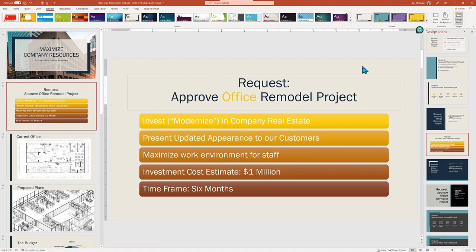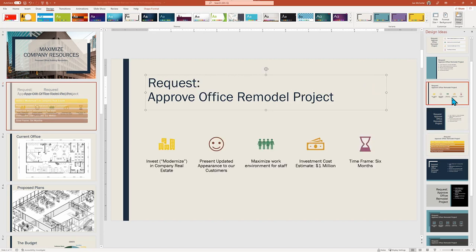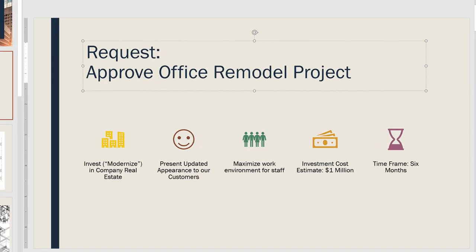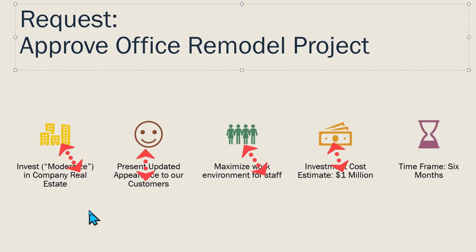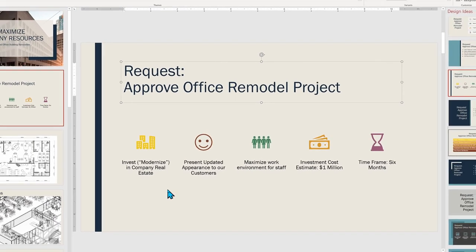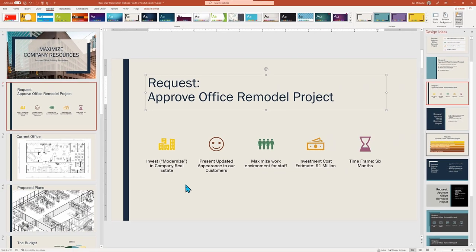SmartArt has even more magic up its sleeve. See the choice of icons to supplement our bullet points. Looking closer, we find the magic — PowerPoint investigated each bullet point to find the main text topic, and then associated a matching icon. You may or may not like the use of graphical icons, but you must admit the cleverness of Design Ideas' ability to find words and marry up matching graphics with a single click of the mouse.